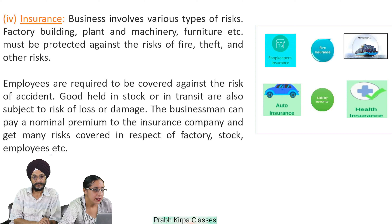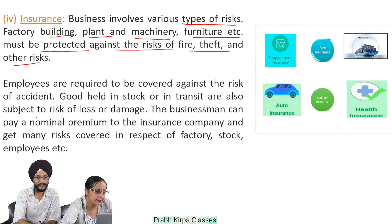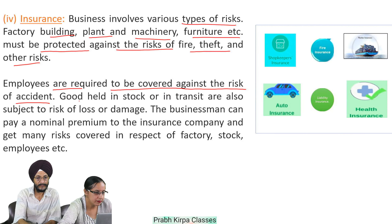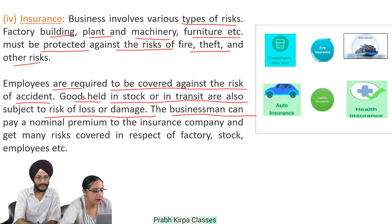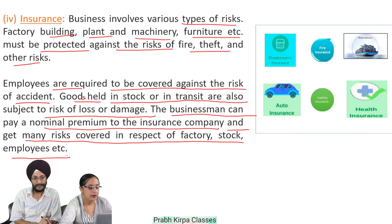Number 4, insurance: business involves various types of risks. Factory building, plant and machinery, furniture, etc. must be protected against the risk of fire, theft, and other risks. Employees are required to be covered against the risk of accident. Goods held in stock or in transit are also subject to risk of loss or damage. The businessman can pay a nominal premium to the insurance company and get many risks covered in respect of factory, stock, employees, etc. It should be noted that some risks like war risks are not covered under any insurance policy.